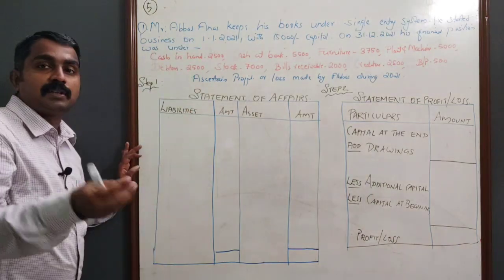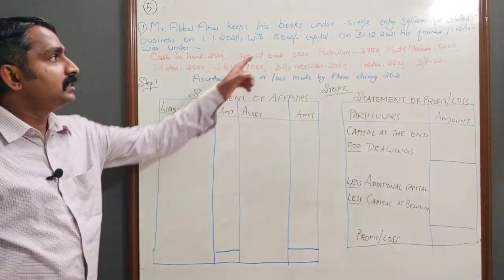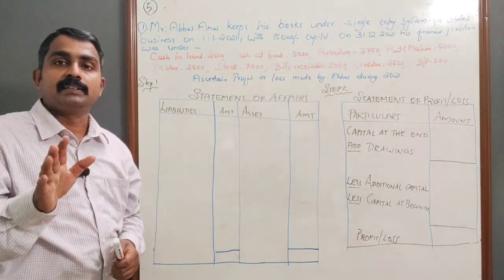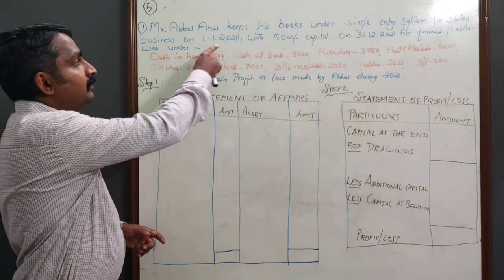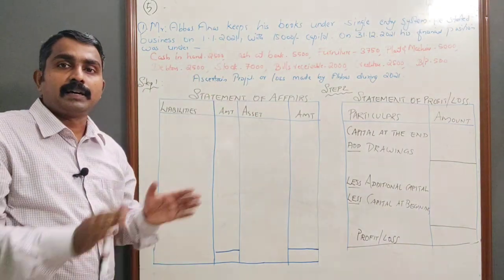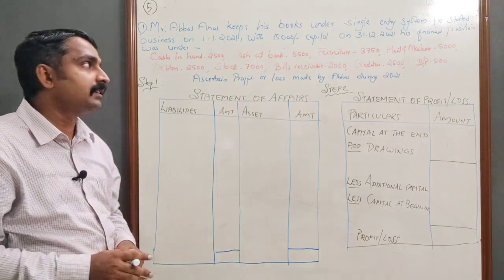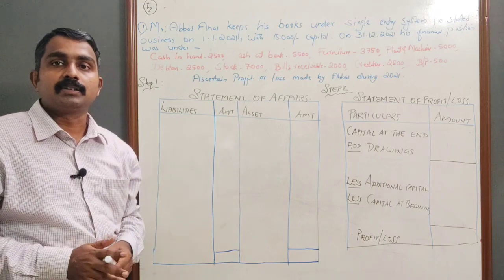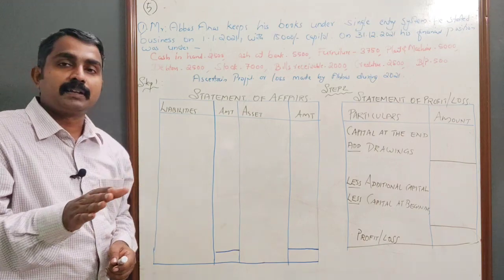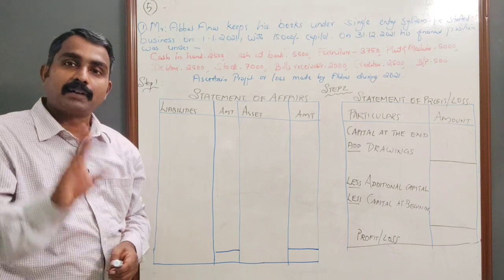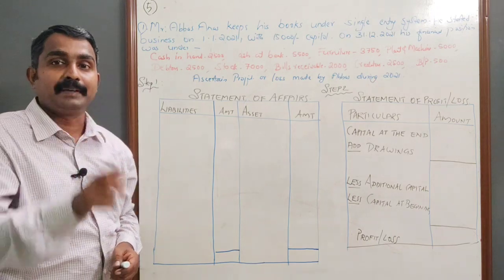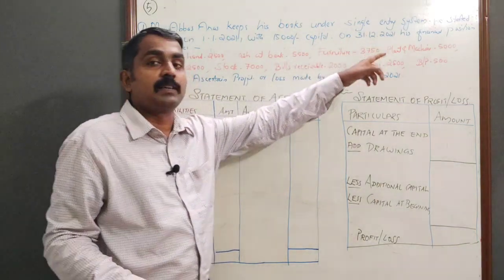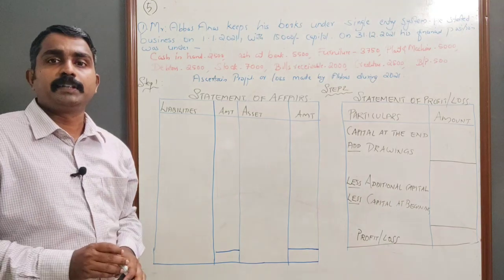Mr. Abbas Anas, a businessman, keeps his books under a single entry system. Abbas Anas started his business on 1st January 2021 with a capital of 15,000 rupees. On 31st December 2021, his financial position was as follows.